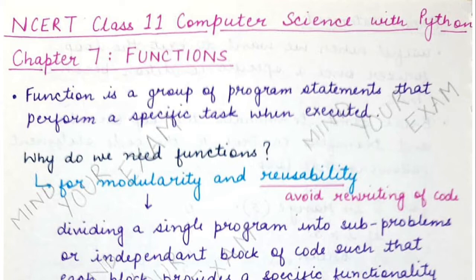What are those requirements? Firstly, you need modularity in your program. That means if a particular program is performing different kinds of tasks, then it is better to divide your program into different sections or different parts that are performing specific functionalities, because dividing or sectioning the program into modules makes it modular and makes it easier to manage.